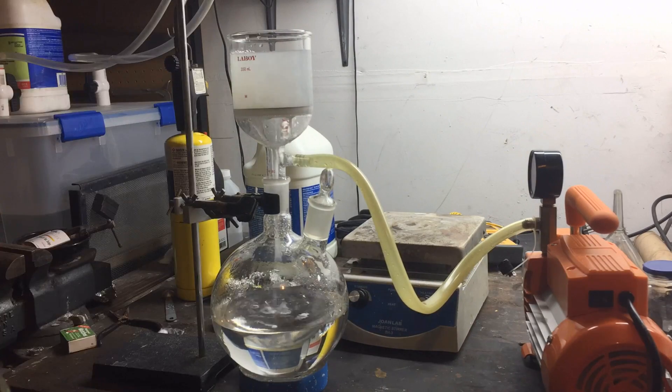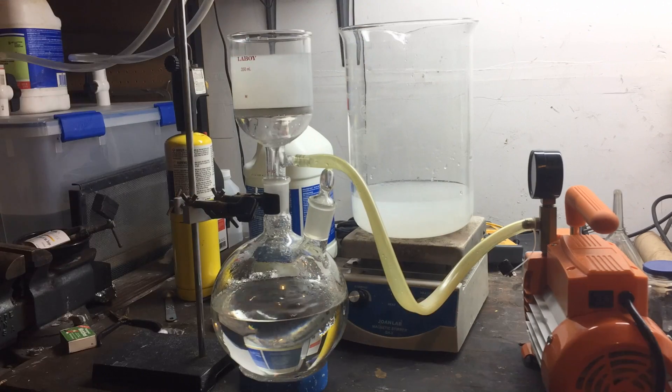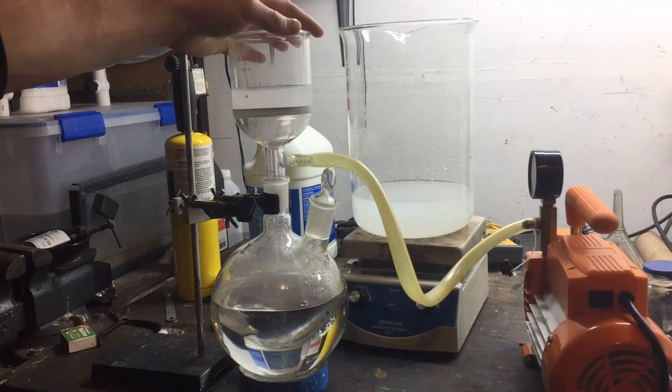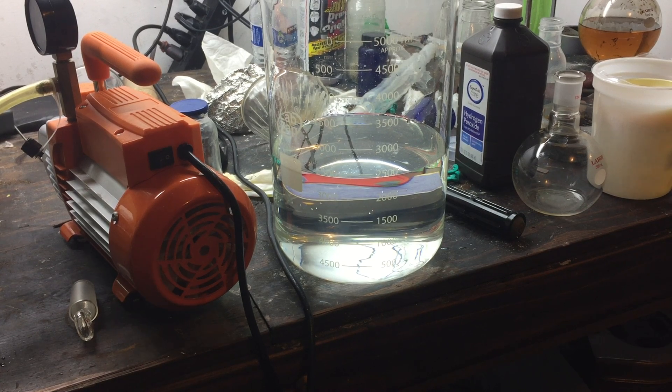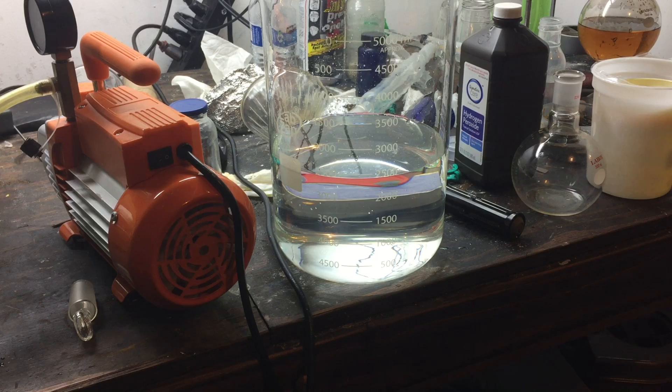I'm pretty sure that this contaminant is from the ammonium nitrate that I used, because it was initially a fertilizer, and there's still probably some trace amounts even though I recrystallized it. After the filtering, you can see that the solution was nearly crystal clear, and it was a lot better than what we started with.